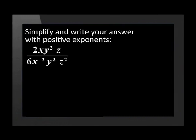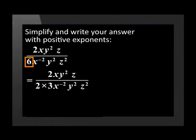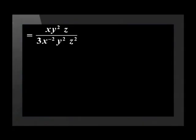Now for something a little more challenging before we go back to George. Write this question down: simplify 2 times xy squared z, all divided by 6 times x to the power of negative 2, y squared, z squared, and write your answer with positive exponents. Let's start with the coefficients: 6 equals 2 times 3, so the 2 in the numerator cancels with the 2 in the denominator. Now apply the laws for exponents — when we divide powers with the same base we subtract the exponents — giving x to the power of 1 minus negative 2, times y to the power of 2 subtract 2, times z to the power of 1 minus 2, all over 3.